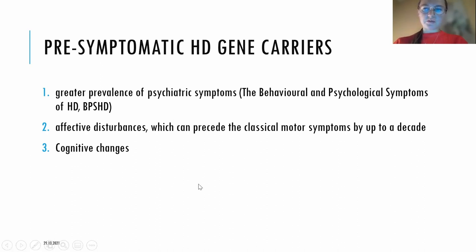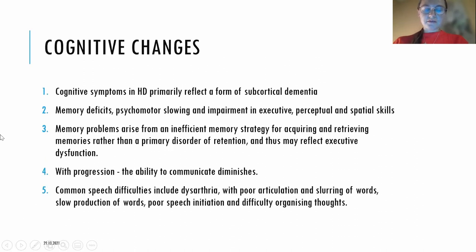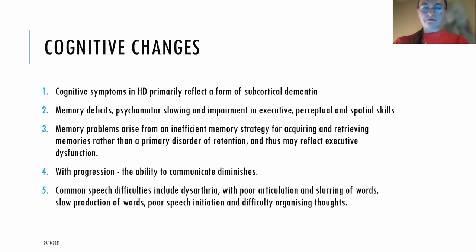Another important cluster of symptoms are cognitive changes. Cognitive symptoms in Huntington's disease primarily reflect a form of subcortical dementia, including memory deficits, psychomotor slowing, and impairment in executive, perceptual, and spatial skills. Memory problems arise from inefficient memory strategy for acquiring and retrieving memories rather than a primary disorder of retention, and thus may reflect executive dysfunction.